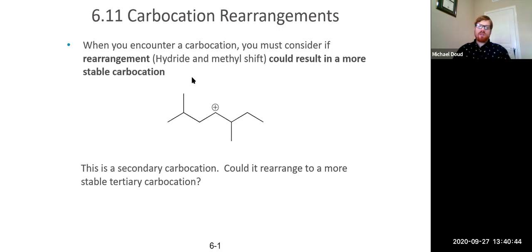You've got a neighbor to the left and a neighbor to the right. Ask yourself, is there any way that it could rearrange to form a more stable tertiary carbocation? This one's secondary. So the only way it would be more stable is with a tertiary carbocation.